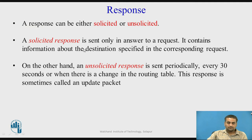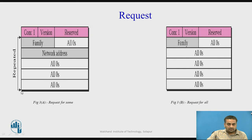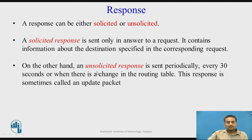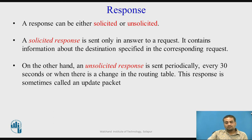The response packet looks just like the request packet with one additional distance field added, giving the distance to the destination network. A response packet can be either solicited or unsolicited. A solicited response is sent only in answer to a request made by a router and contains information about the destination specified in the corresponding request. An unsolicited response, on the other hand, is sent periodically every 30 seconds or whenever there is a change in the routing table. This unsolicited response is also called an update packet, and whenever it is received by a router, the router updates its routing table.